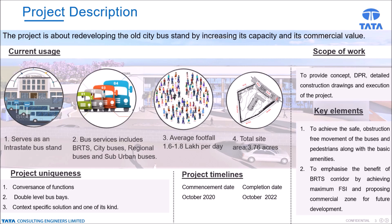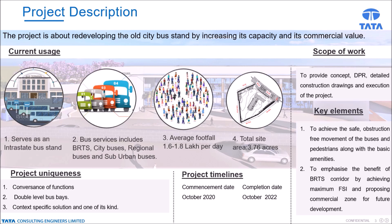The main characteristic of a bus stand is its functional convergence, as it serves as an important node of transfer between different modes of transport. Double-level bus bays are provided to accommodate the projected number of bays — a context-specific solution which makes this project one of its kind.